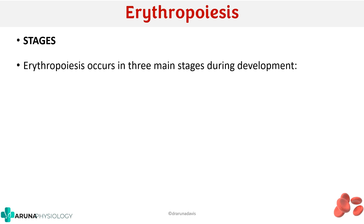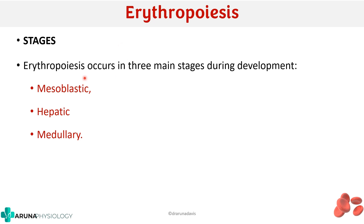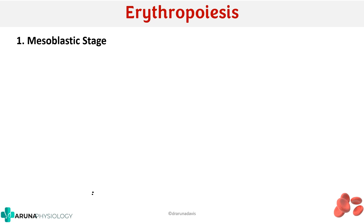Erythropoiesis can be divided into three stages: first is the mesoblastic stage, then the hepatic stage, and then the medullary stage. So erythropoiesis in an individual basically occurs in these three stages — mesoblastic, hepatic, and medullary.